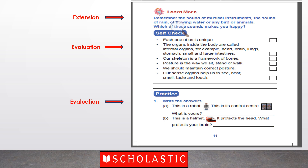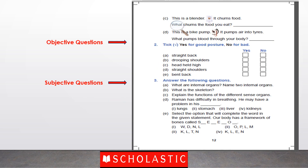Before evaluation, every lesson ends with an extremely interesting activity in the learn more section. In this particular learn more section, students will discuss the specific sounds which make them happy. Self-evaluation is necessary for children as well. For that we have a self-check section where all the key learning points are given with check boxes. The structure of practice exercises is consistent for all the lessons. Practice exercises start with objective type questions like puzzles, fillers, tick yes or no, or true or false.